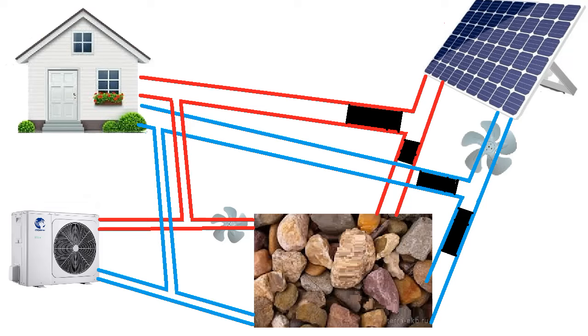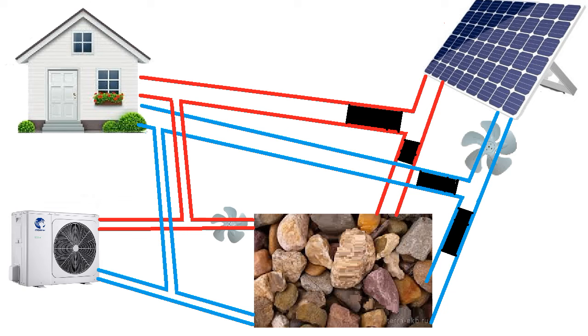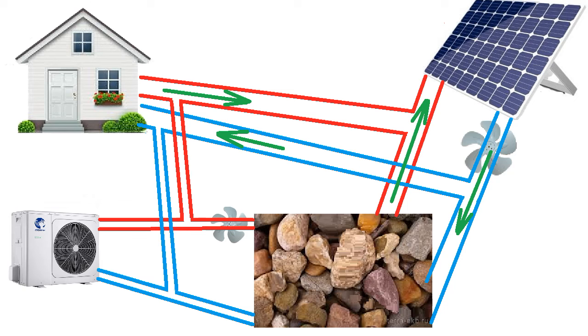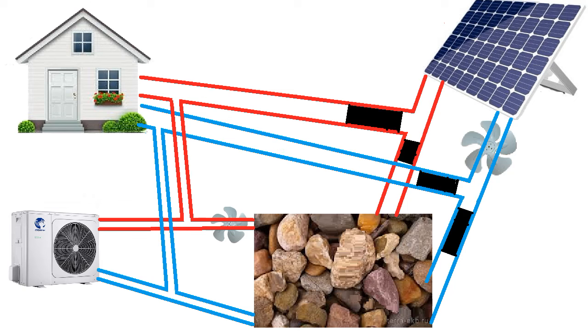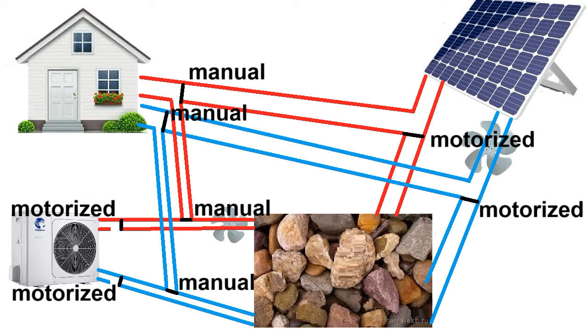We also note that these pipes must be closed at night and during non-sunny hours to stop gravitational circulation, and for example this can be achieved by these positions of the dampers.